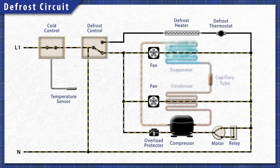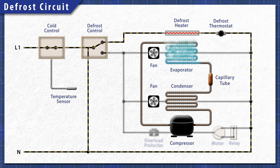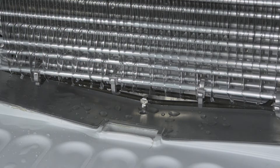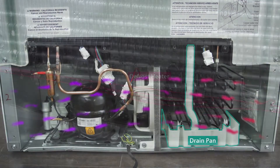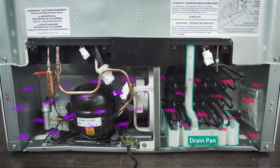When the cycle begins, the defrost control shuts off power to the compressor and the fans. This prevents the refrigerator from cooling while the heater is active. Next, power is sent to the heating element which melts the ice on the coils. The water flows into the drain pan under the fridge and evaporates over time.